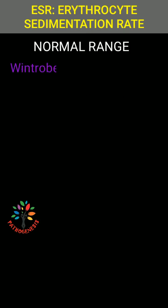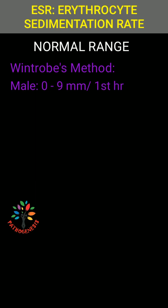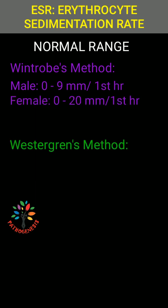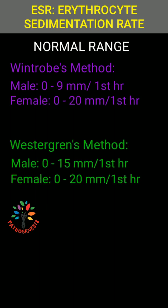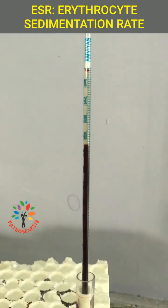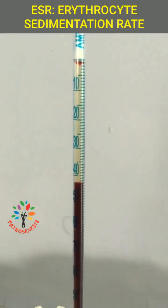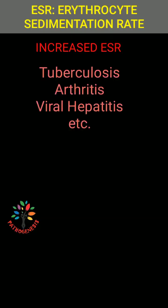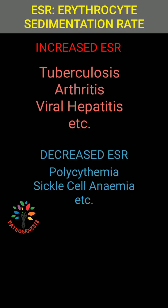Normal range. Increased ESR is seen in tuberculosis, arthritis, viral hepatitis, etc. Decreased ESR is seen in polycythemia.